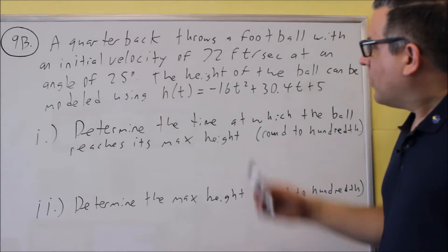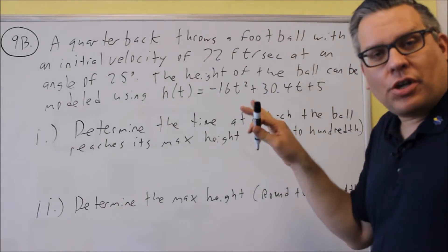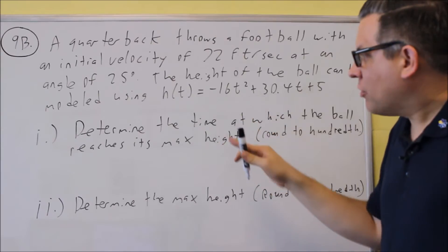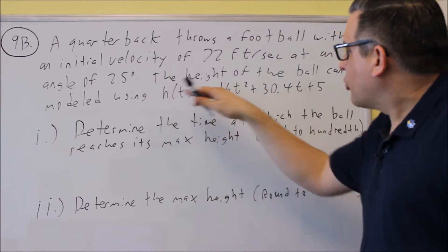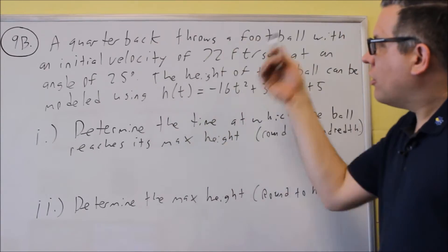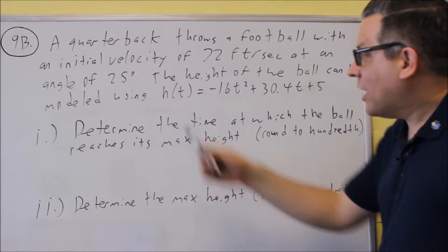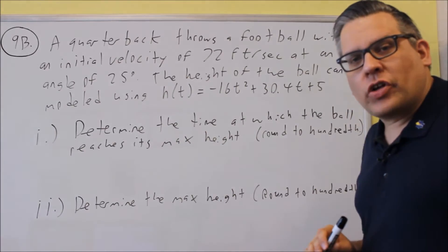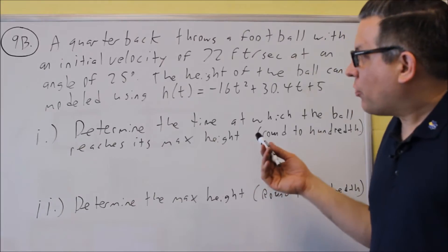Okay, for 9B, we're given all this information up here, but actually all you have to really be concerned about is this quadratic formula here. They tell you that initial velocity is 72 feet and angle 25 degrees. Actually, that information you don't even need to use in this particular problem.